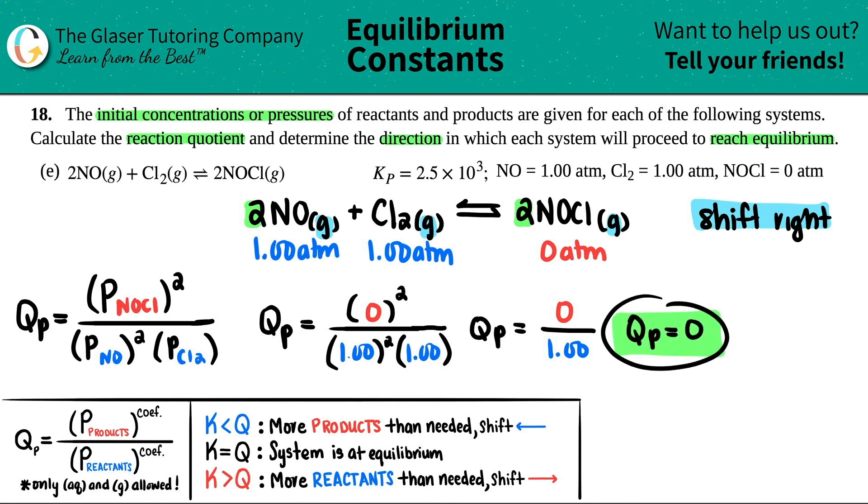So in this case, our QP is 0. And from what we stated before, we're going to shift to the right. Technically, if you do have nothing on the product side, your QP will always be 0. So that's a fact. So hopefully this helped. Let me know in the comments. Thank you so much for viewing the video. Let's keep working hard. Good luck on your future tests and quizzes. And I will see you in later lessons. Have an awesome day. Bye-bye.